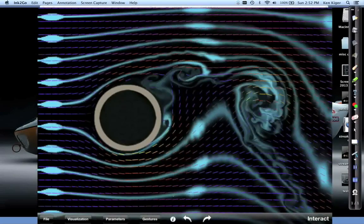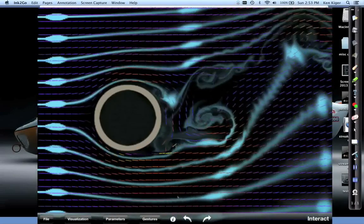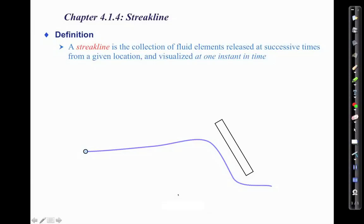Let's go back to our definitions. A streak line is a collection of fluid elements that have been released at successive times, so successive times is important, from a given location and visualized at one instant in time. This is in contrast to a path line where that trajectory represented the motion of that marked element through time. This line exists and is defined at one instant in time and it changes its shape at different instances in time if the flow is unsteady.